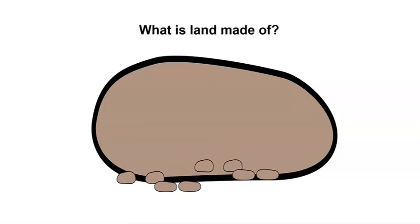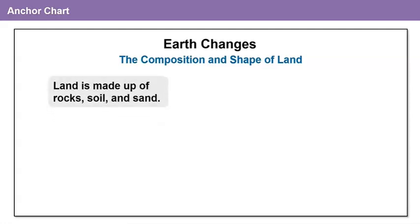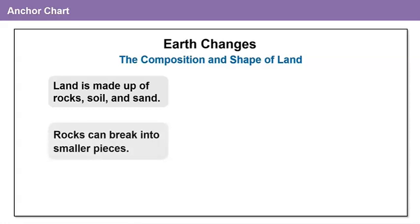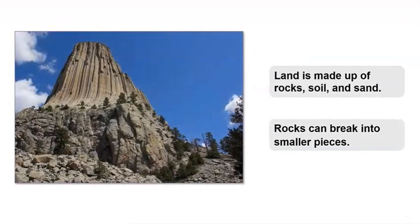Wow, this seems so important. We should begin an anchor chart to capture all our learning throughout this module. Think about what we learned so far about the composition and shape of land: land is made up of rocks, soil, and sand, and rocks can break into smaller pieces.